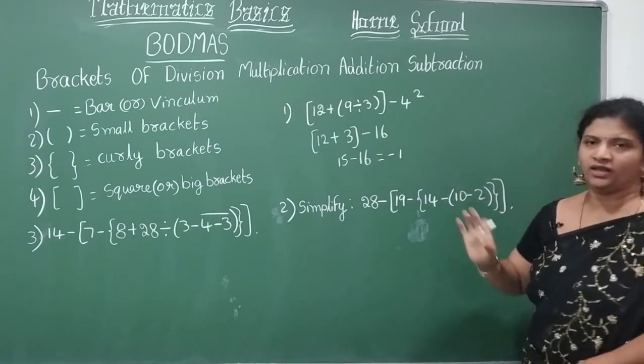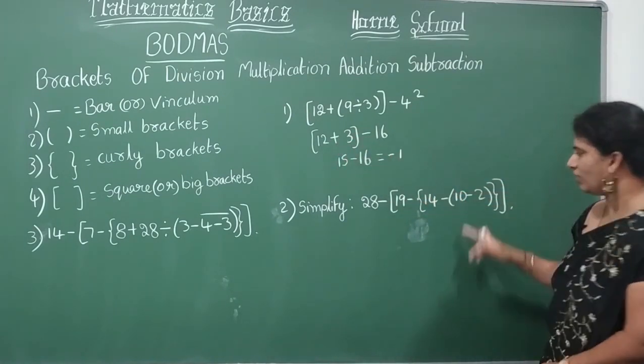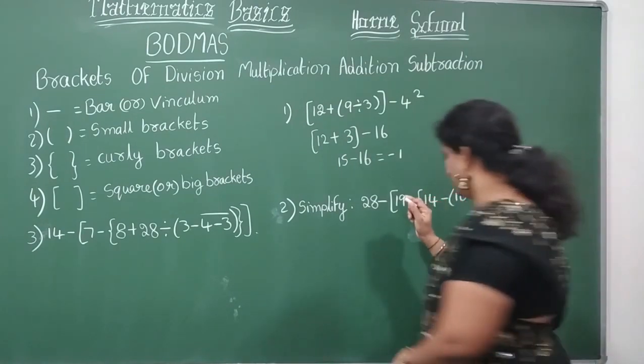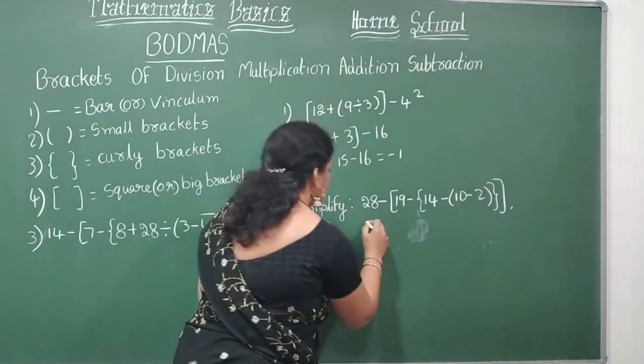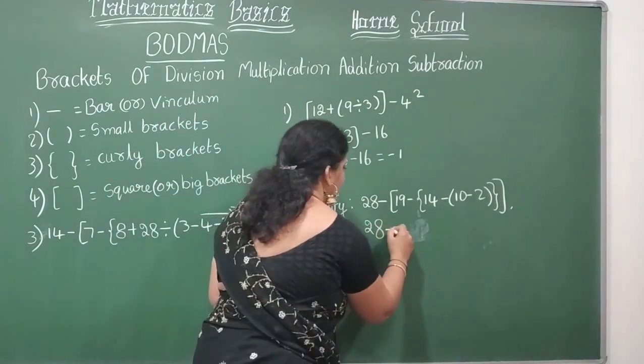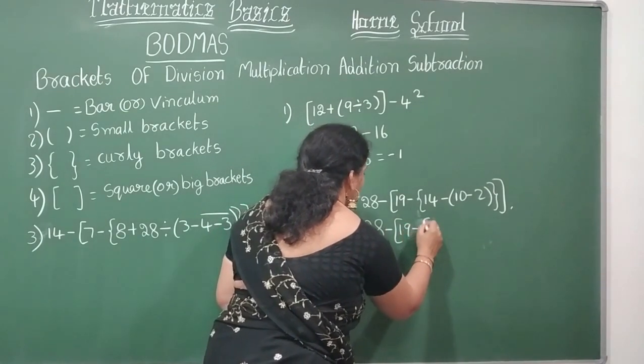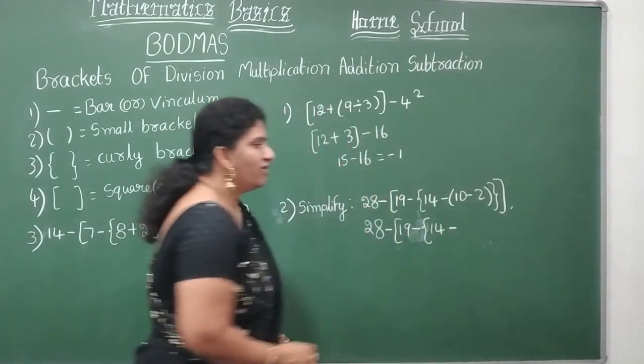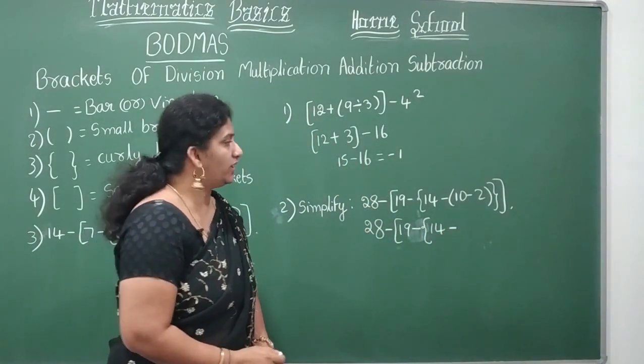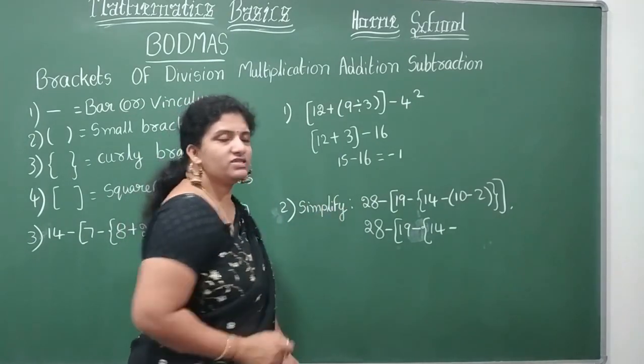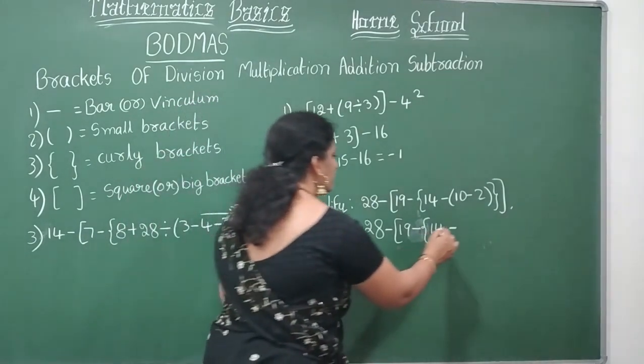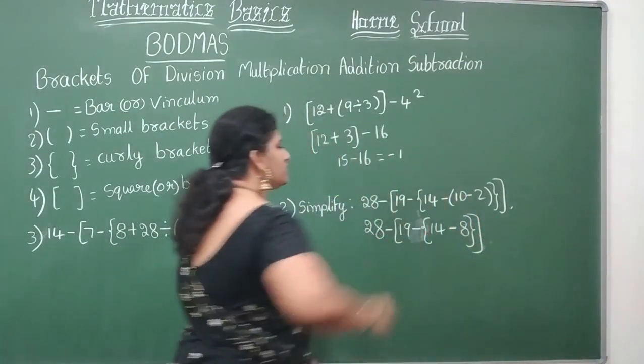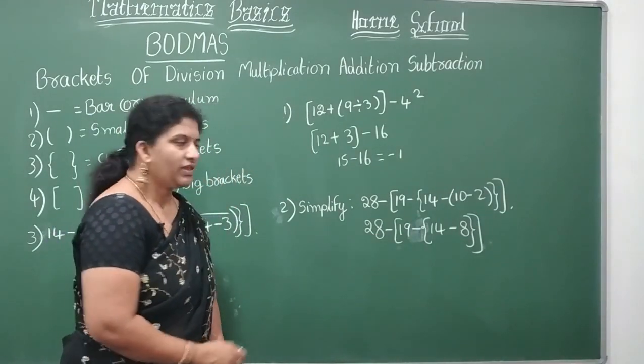First what is the order? Bar. Do you have any bar? No. Next small brackets where do you have? Yes, here I have small brackets. First let us do this one. So now look here children carefully: 28 minus square bracket 19 minus curve bracket 14 minus. When you are simplifying the round brackets you need to remove the bracket. 10 minus 2 is 8. So remove the bracket and write 8, curl bracket and square bracket.